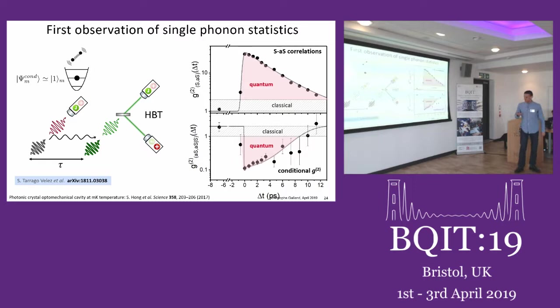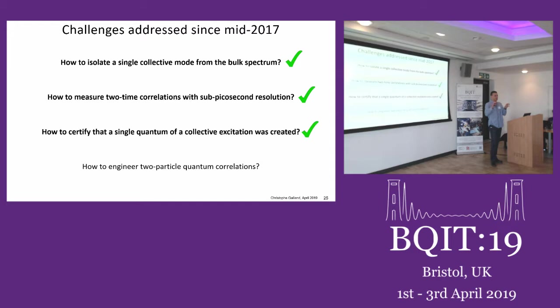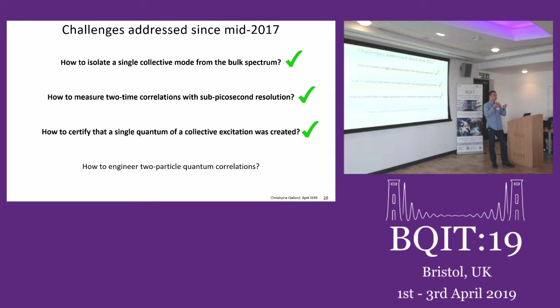That's basically the single-phonon control — creation and detection of single phonons. This would be interesting to do on different systems. Now I want to show what we are doing currently, which is not yet published but has very interesting results. Now that we can address individual phonons, can we start playing with correlations between two different modes? The lifetime is too short for entangling phonons in different places, but can we already do it with a single sample — a piece of bulk diamond?